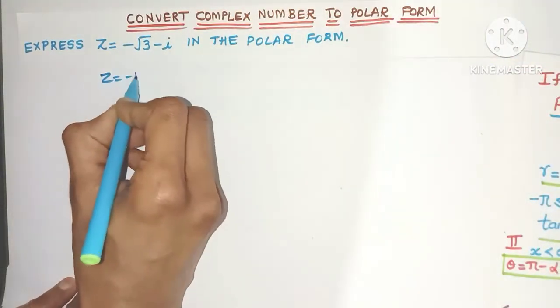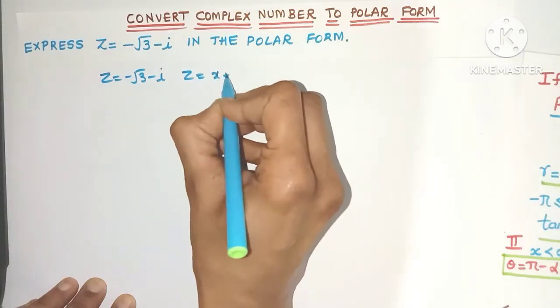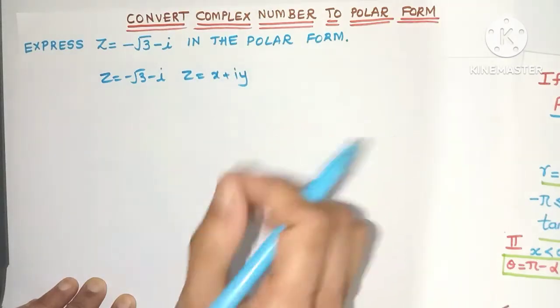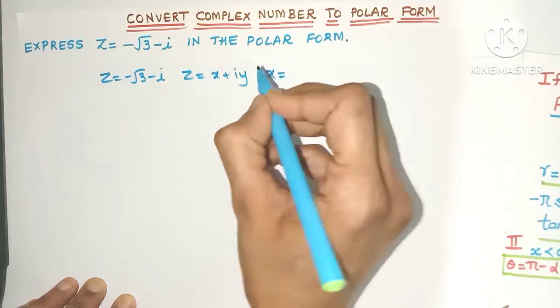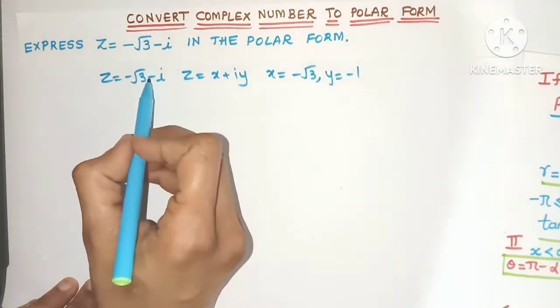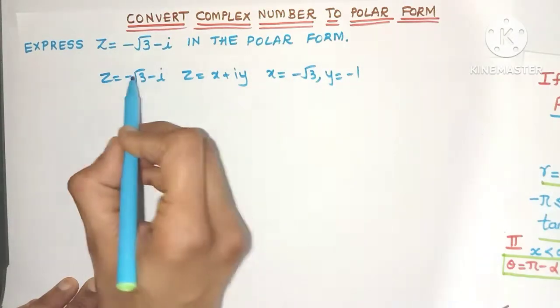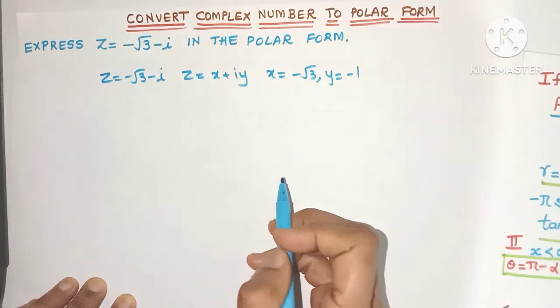So here you have z = -√3 - i. So if I compare it with the complex number z = x + iy, what will be x? Yes, x will be -√3, y will be -1. Remember this is -i so y will be -1. Also remember to note down these minus signs.